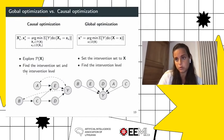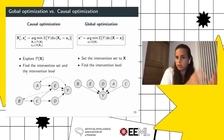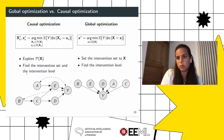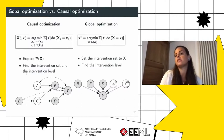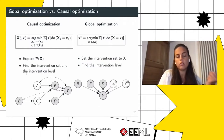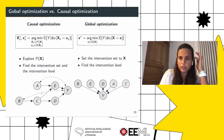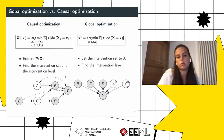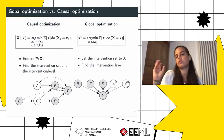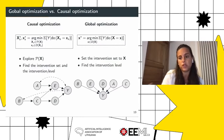Differently from a global optimization problem, in a causal optimization setting we want to explore all possible interventions and find both the intervention set and the intervention level. In a global optimization problem, you try to optimize a target variable manipulating all possible inputs — you don't have the problem of selecting the intervention set, only the intervention level. In causal optimization, you consider the graph on the left where you have complex causal relationships between variables, unobserved confounders, and non-manipulative variables. A standard global optimization would break all causal relationships between variables, intervening on all nodes.